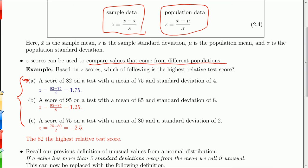When you look at A here, you have an 82 - that's x - on a test with a mean of 75. That's x-bar here or mu. Maybe you're dealing with population data. The standard deviation is four. So to get the z-score, you just take x minus mu over sigma, and you get 1.75.